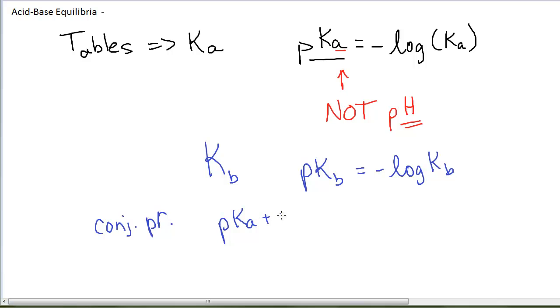For a conjugate pair and only for a conjugate pair, the pKa plus the pKb of that conjugate pair will equal 14 in a very similar fashion to the pH plus pOH equals 14. Not for the same reasons necessarily, but mathematically it does work out to this. So if you know the pKa for an acid, you can calculate the pKb for its conjugate base. This only works for the conjugate pair.